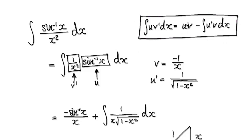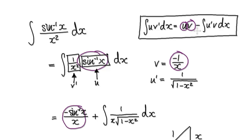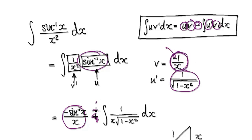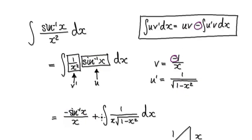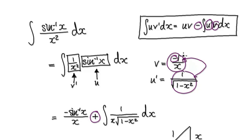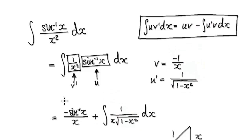So integration by parts: it's saying get u times v — that will give us this. And then you've got your minus, and then it's saying get u prime times v. You see this minus here will cancel out with this minus here — that will give you a positive. And then u prime times v times v — those two multiplying together — will give you this. And don't forget you've got a minus and a minus, which gives a positive. So that takes us to here.